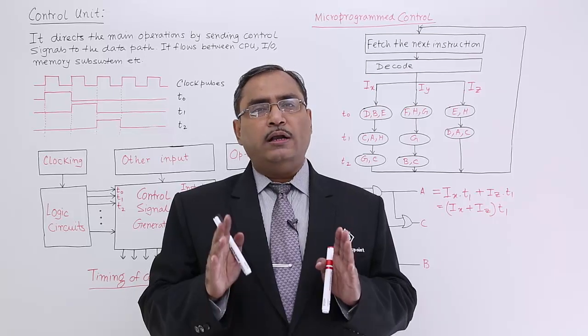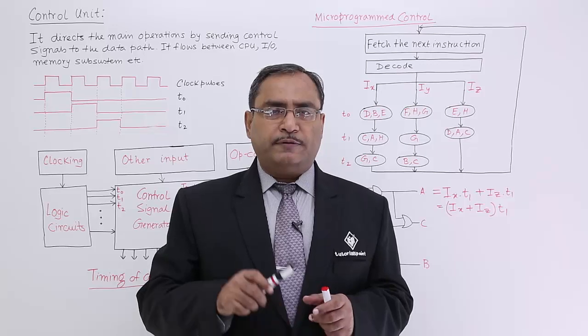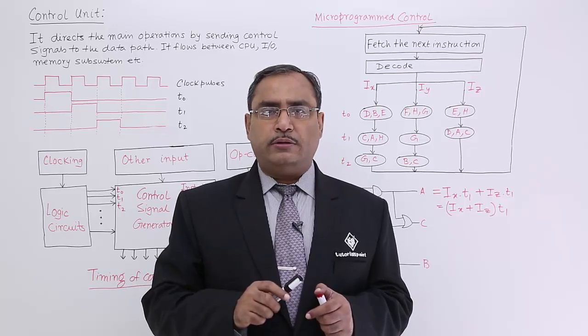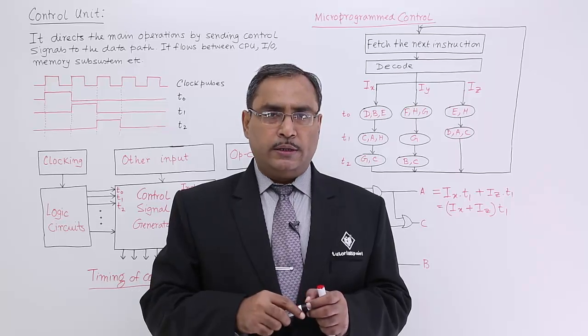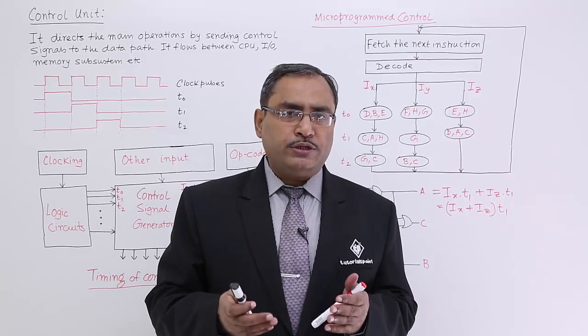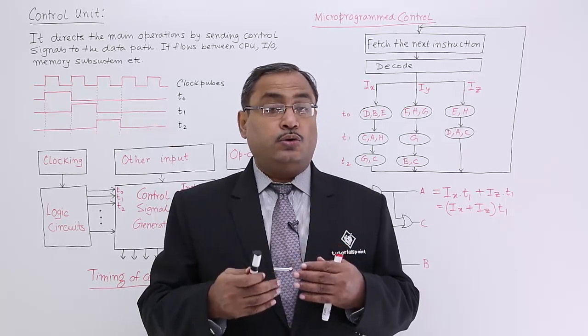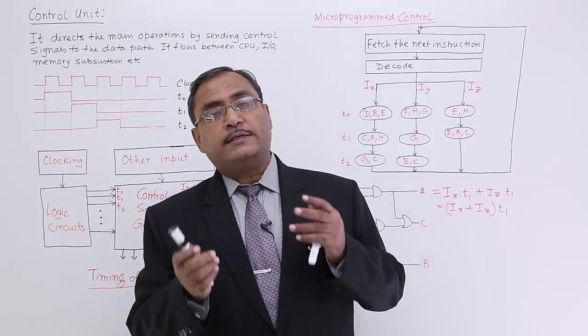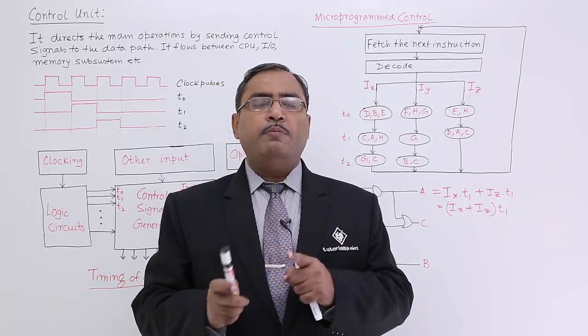Control signals to select one device, take the example of memory. After selecting a certain memory location through the address bus and the address decoded hardware, now what to be done with the memory location? Should I go for read or should I go for memory write? So control signal read and write will decide whether I shall be going for memory read or memory write.